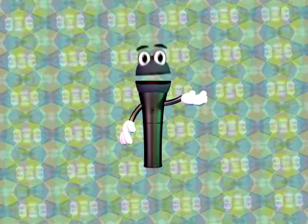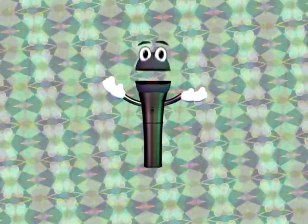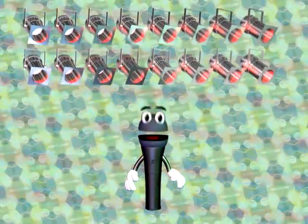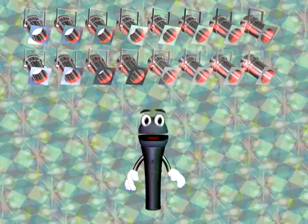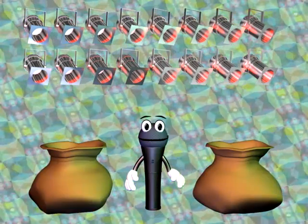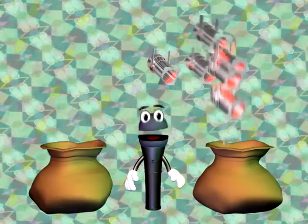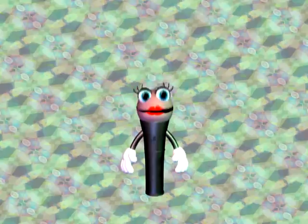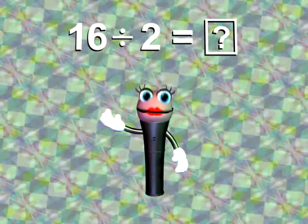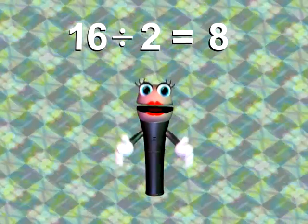After touring for a while, the Rappsters soon had 16 spotlights. Two bags held the spotlights when the band traveled. How many spotlights should go into each bag to have an equal number of lights in each bag? 16 divided by 2 equals... The answer is 8.